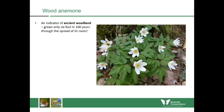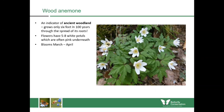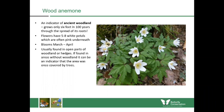Also in the buttercup family but looking nothing like one is the wood anemone — a really good indicator of ancient woodland because it only spreads six feet every hundred years through its roots. If you find a huge mass of it, you know you're in a very old woodland. The flowers have five to eight white petals, sometimes pink underneath when they first emerge, and they bloom from March until April. Finding wood anemone in open grassland can be a poignant indicator that the area was once covered in trees.